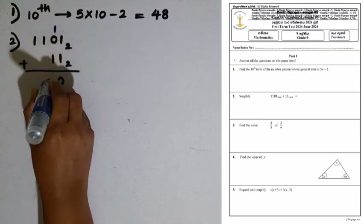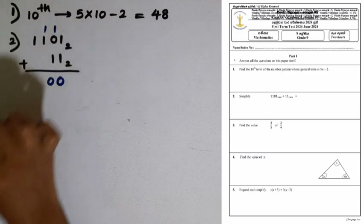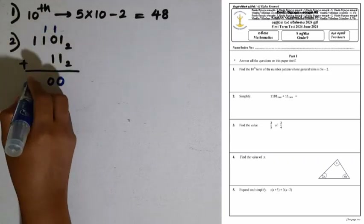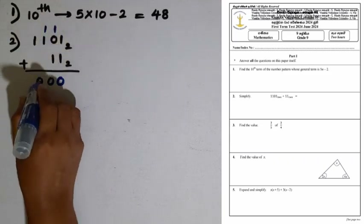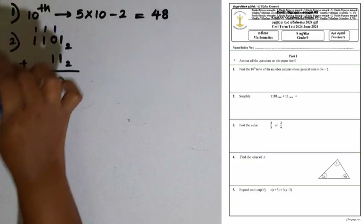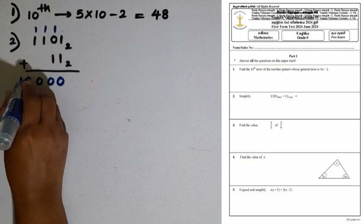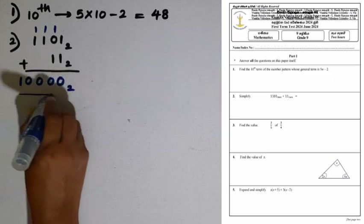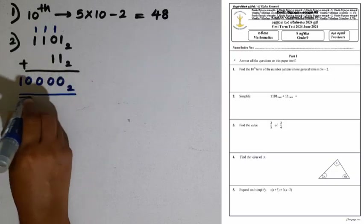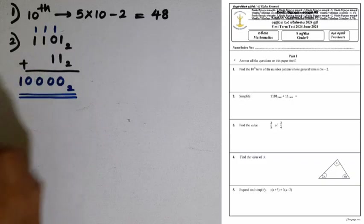Then 1 plus 1 is 10 again — keep 0 and carry 1. Then 0 plus 1 plus 1 plus 1 gives 10 — keep 0 and carry 1. Then 1 plus 1 plus 1 is 10, base 2. So the final answer is 10000 base 2.